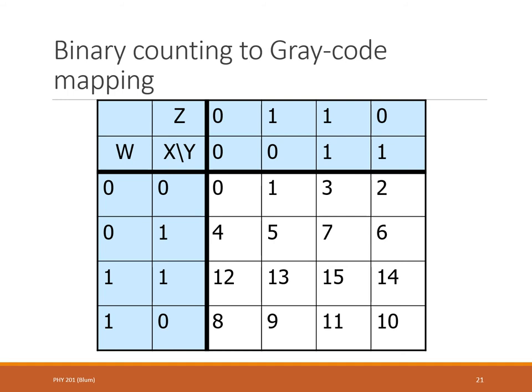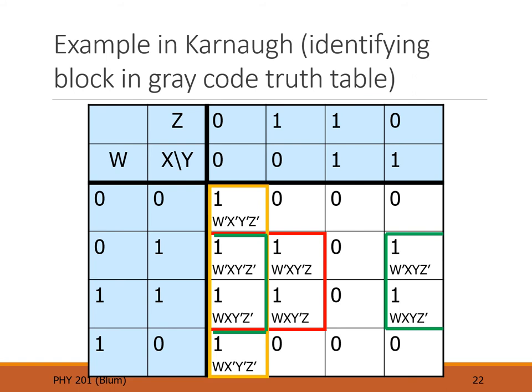I've taken the example originally given in binary counting order, applied that mapping, and arrived at the gray code-ordered truth table. Now my job is to identify the blocks. Remember our rules: a block is a rectangular set of ones. We're looking at the outputs, looking for ones. They should form rectangles of size one, two, four, or eight, and they're allowed to overlap.